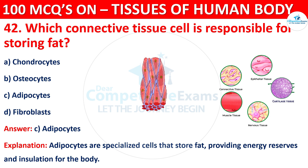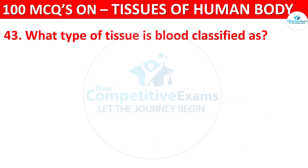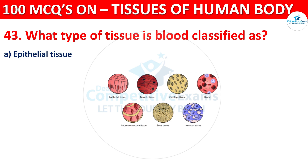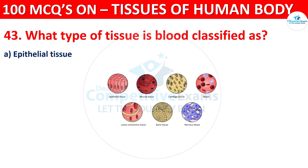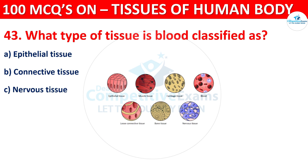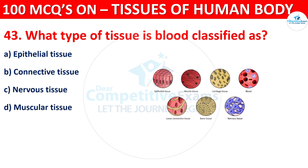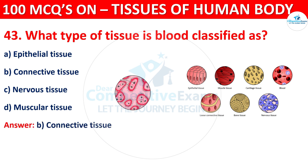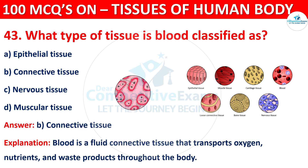Question number 43. What type of tissue is blood classified as — Epithelial Tissue, Connective Tissue, Nervous Tissue, or Muscular Tissue? The correct answer is B, that is Connective Tissue. Blood is a fluid connective tissue that transports oxygen, nutrients, and waste products throughout the body.